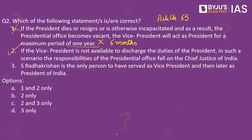The third statement is wrong because there have been six people who served as vice president and then later as president of India — not just one as stated. These six people are: Radhakrishnan, who was the first vice president and was elected as president in 1962; and others including Zakir Hussain, V.V. Giri, R. Venkataraman, Shankar Dayal Sharma, and K.R. Narayanan. Since the question asked for the correct statement, the answer is Option B: two only.